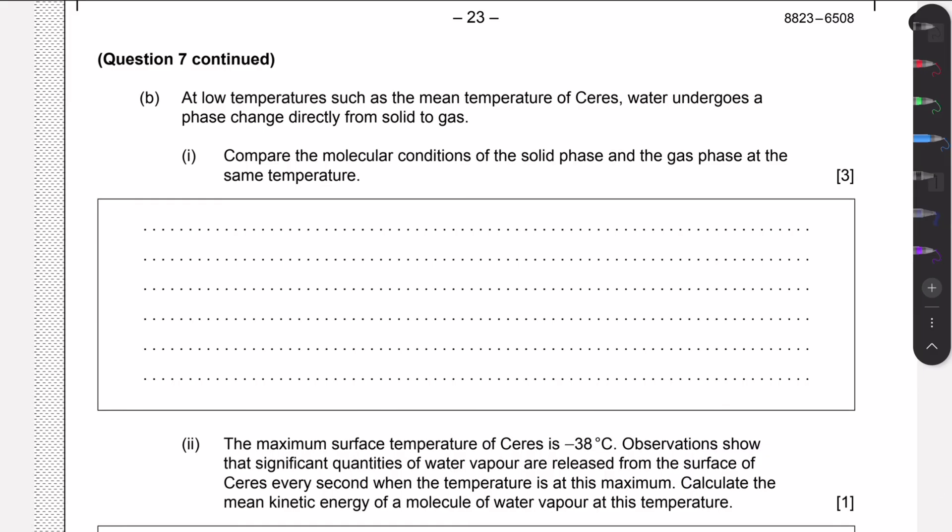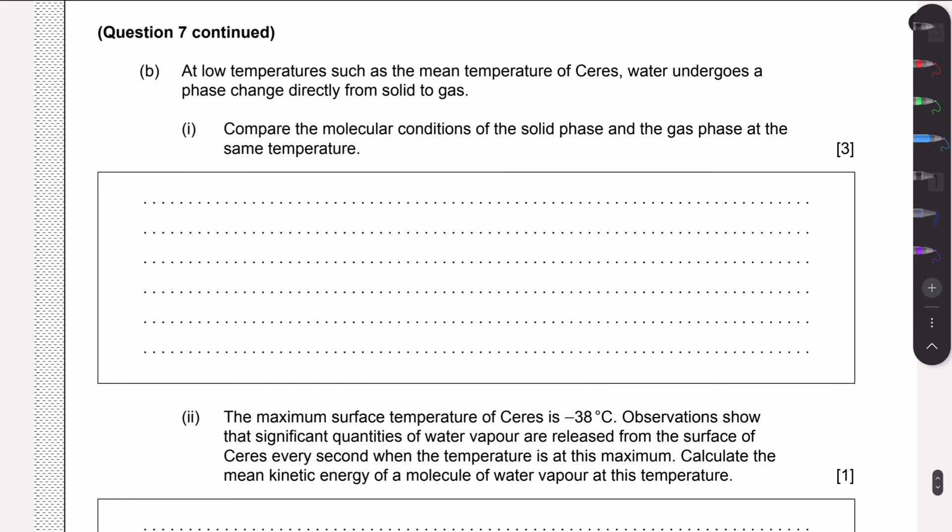In these energy transfer types of questions, we generally want to mention what kind of process is happening, whether it's conduction, convection, or radiation. Here it was conduction. In this question, they say that at lower temperatures, water undergoes phase change directly from solid to gas. We need to compare the molecular conditions of the solid phase and the gas phase at the same temperature. Let's make two columns, solid and gas. Solid has high intermolecular forces. Because of this, the molecules are close together. Also, due to the high intermolecular forces, particles have little freedom to move. They are stuck into a lattice.